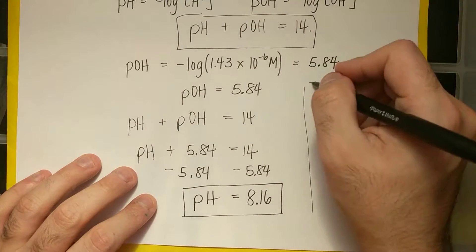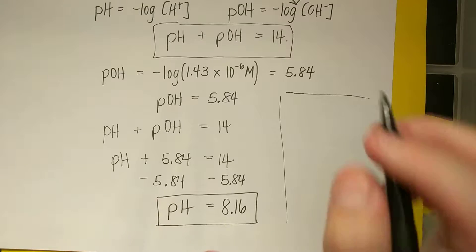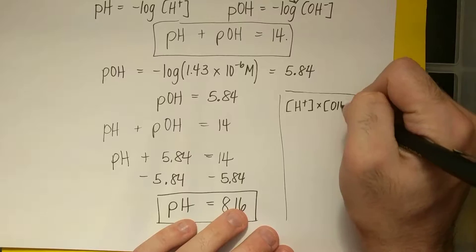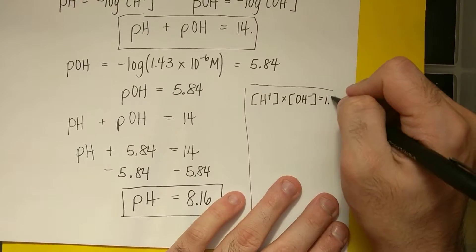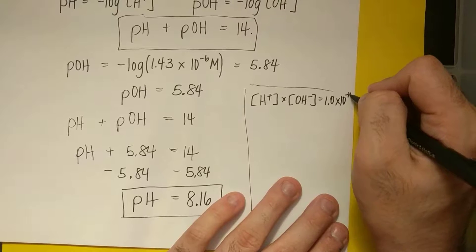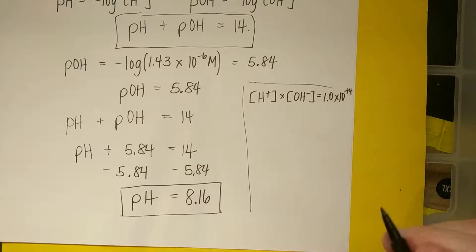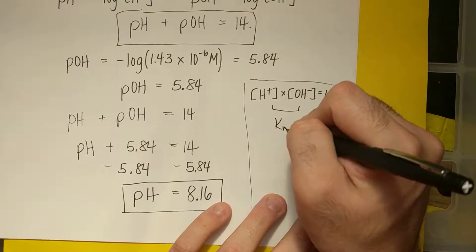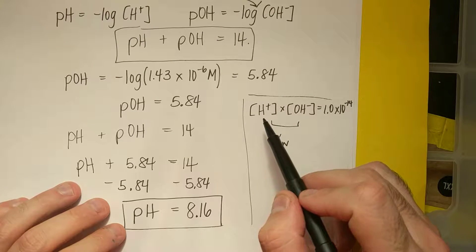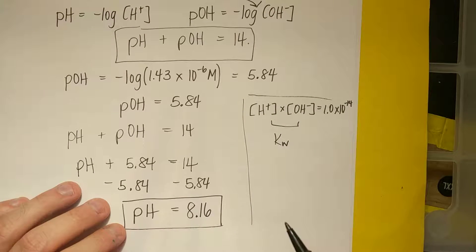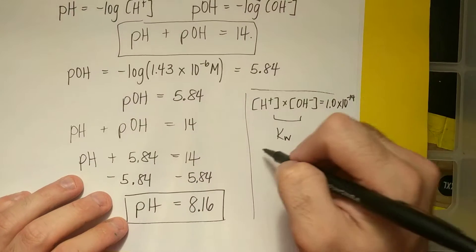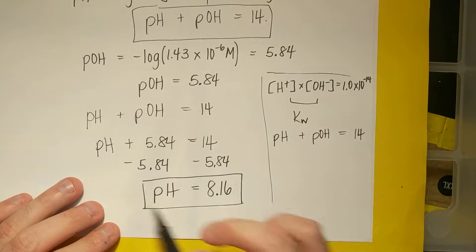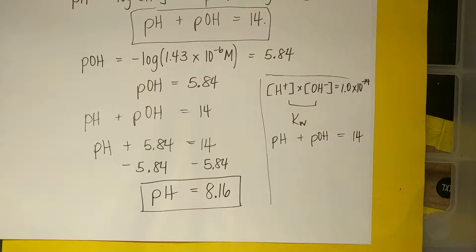Another way you could solve for this is knowing that concentration of H⁺ times the concentration of OH⁻ should equal 1.0 times 10 to the minus 14th. But you get the same answer. This is my KW expression. So if I take my concentration of acid and I multiply times my concentration of base, I should get 1.0 times 10 to the minus 14th. That's the same thing as saying pH plus POH equals 14. It's just so much easier to use this pH and POH business.